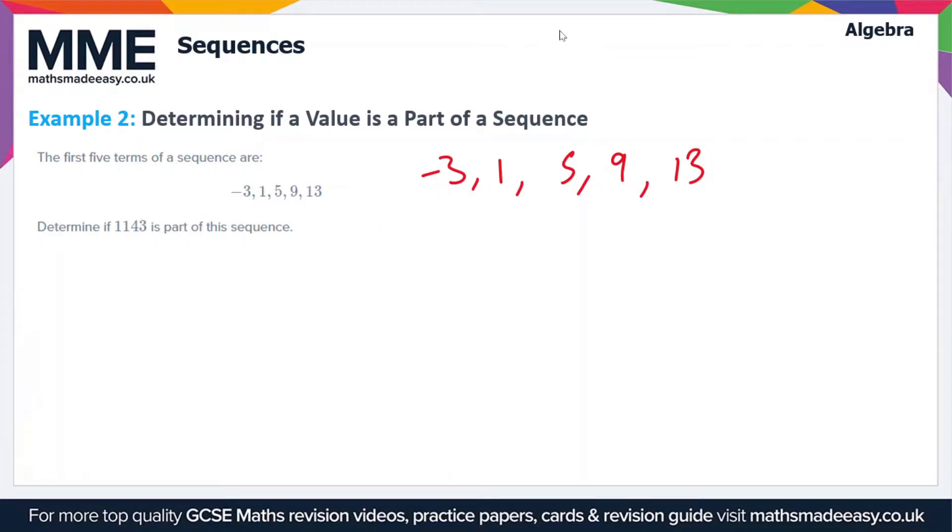We'll start off by finding the nth term, so that's going to be in the form an plus b. A is the common difference, in this case that's plus 4, so to go from one term to the next we're adding 4 each time. This gives us 4n to work with. If we have 4n as our nth term, then the values we're going to get for our sequence are 4, 8, 12, 16, and 20. So that's just the 4 times table. Obviously that's not the sequence that we're given in the question.